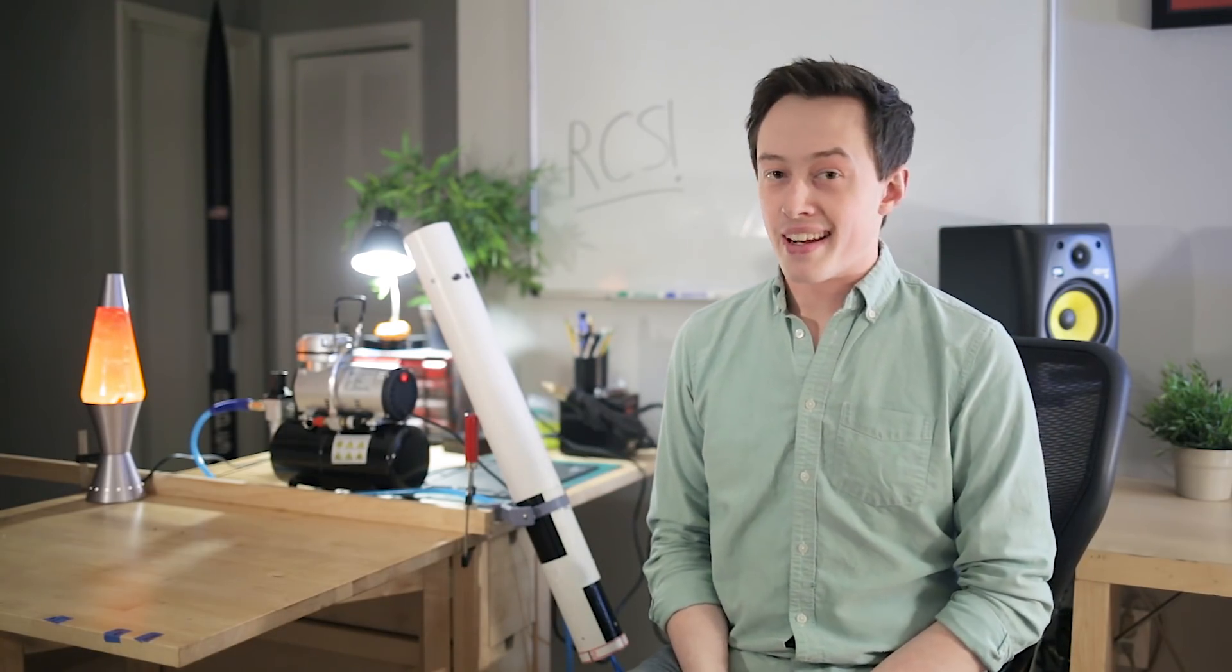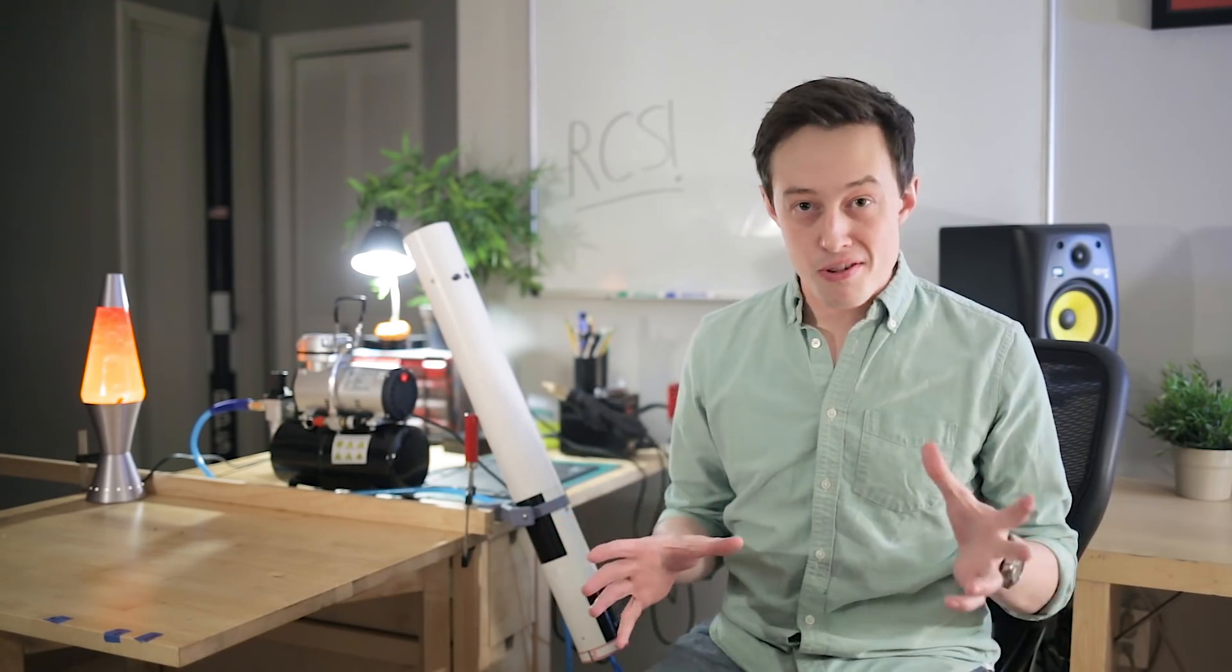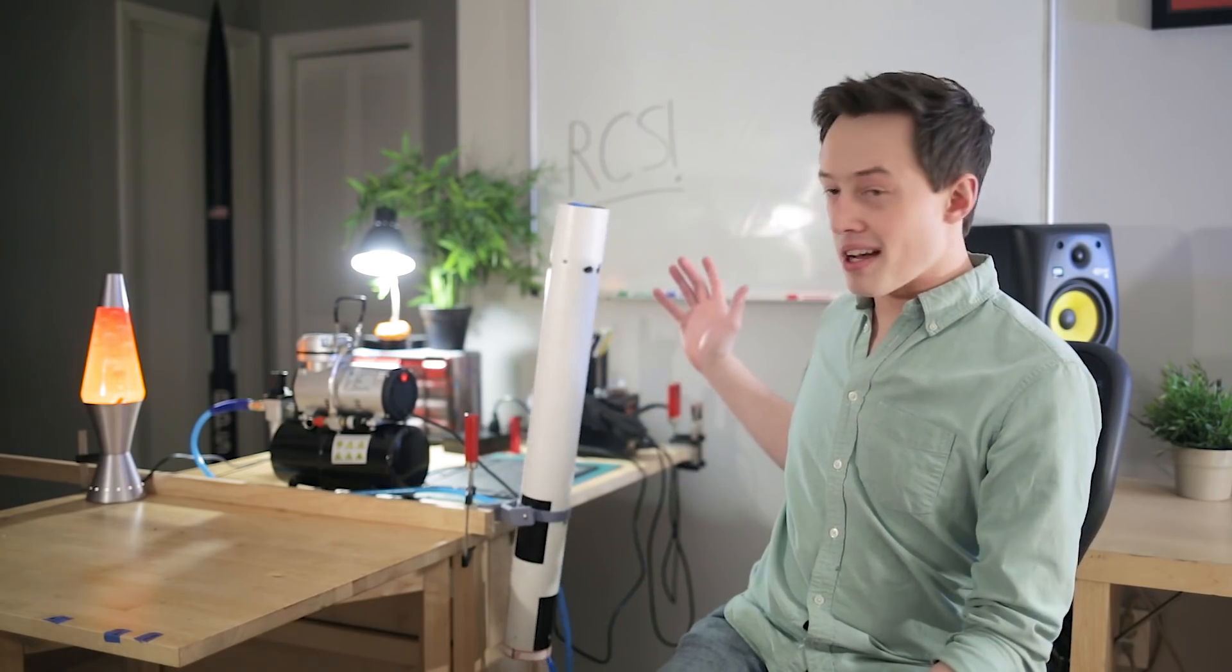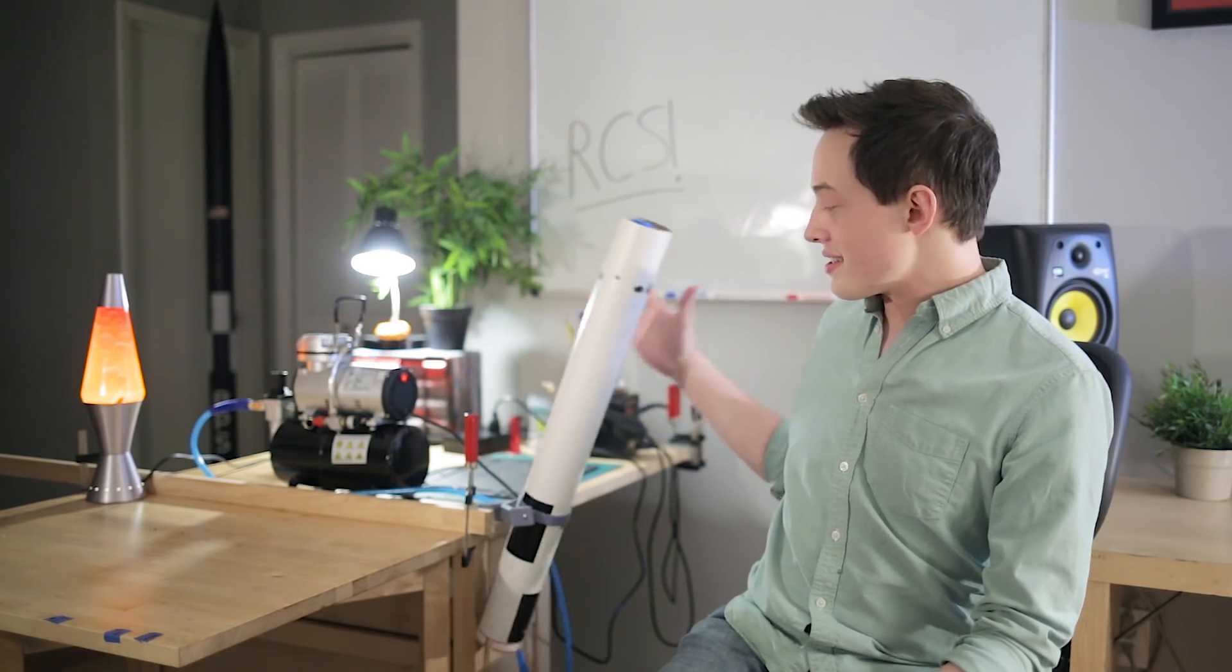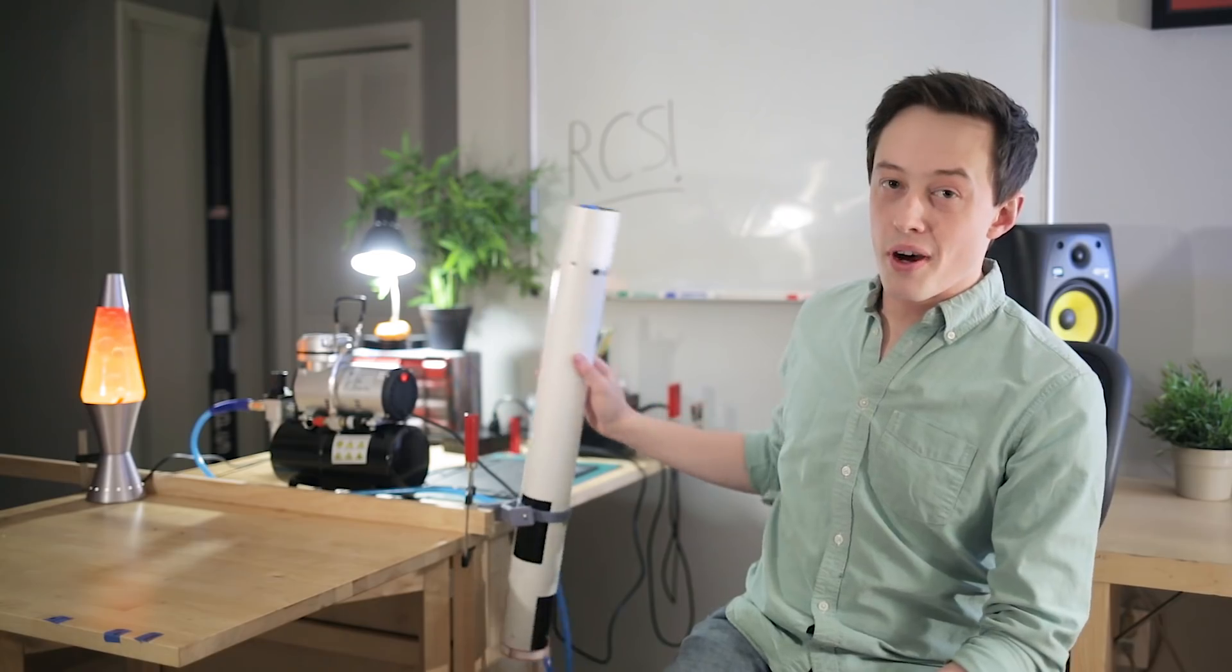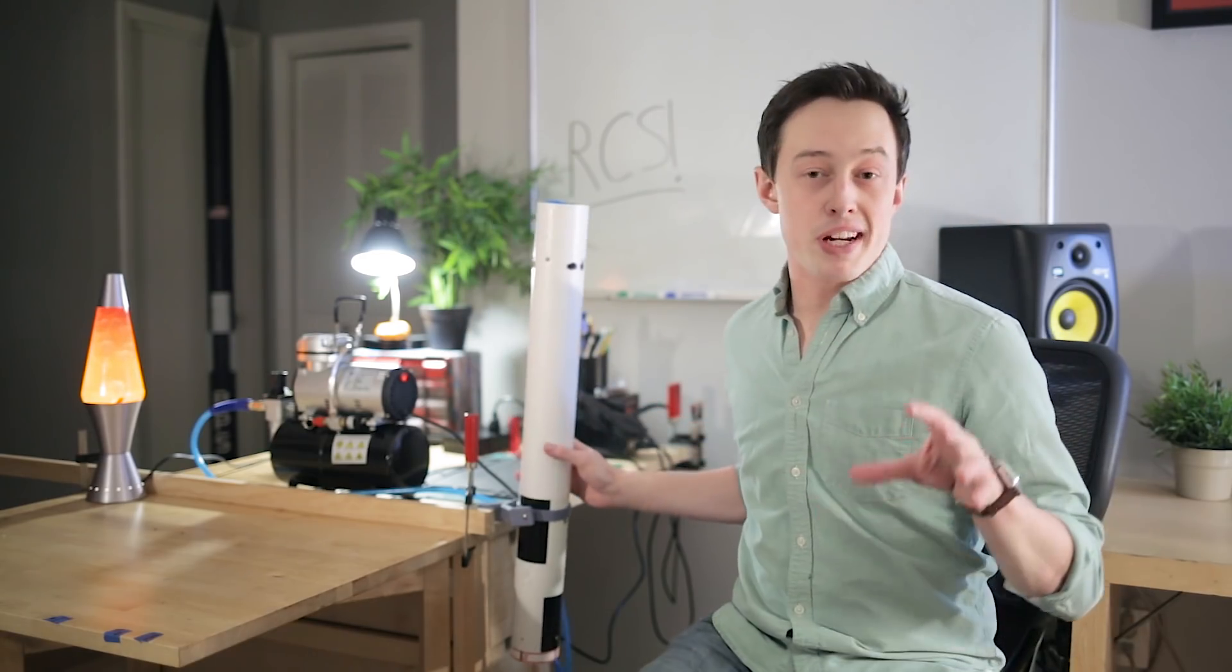And we're gonna cut ahead here because this takes a while. While this is pressurizing I'll let you know that basically this rocket is unstable where it currently sits on this mount. It's able to rotate on one axis here and that's the axis we're gonna be controlling.